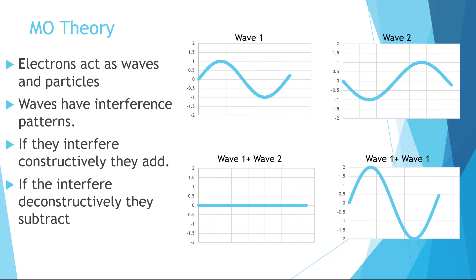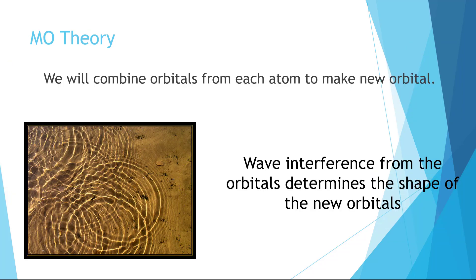So now with that in mind, how does this relate to orbitals? In MO theory, we combined orbitals from each atom to make new orbitals. The shape of the wave interference determines the shape of the new orbitals.